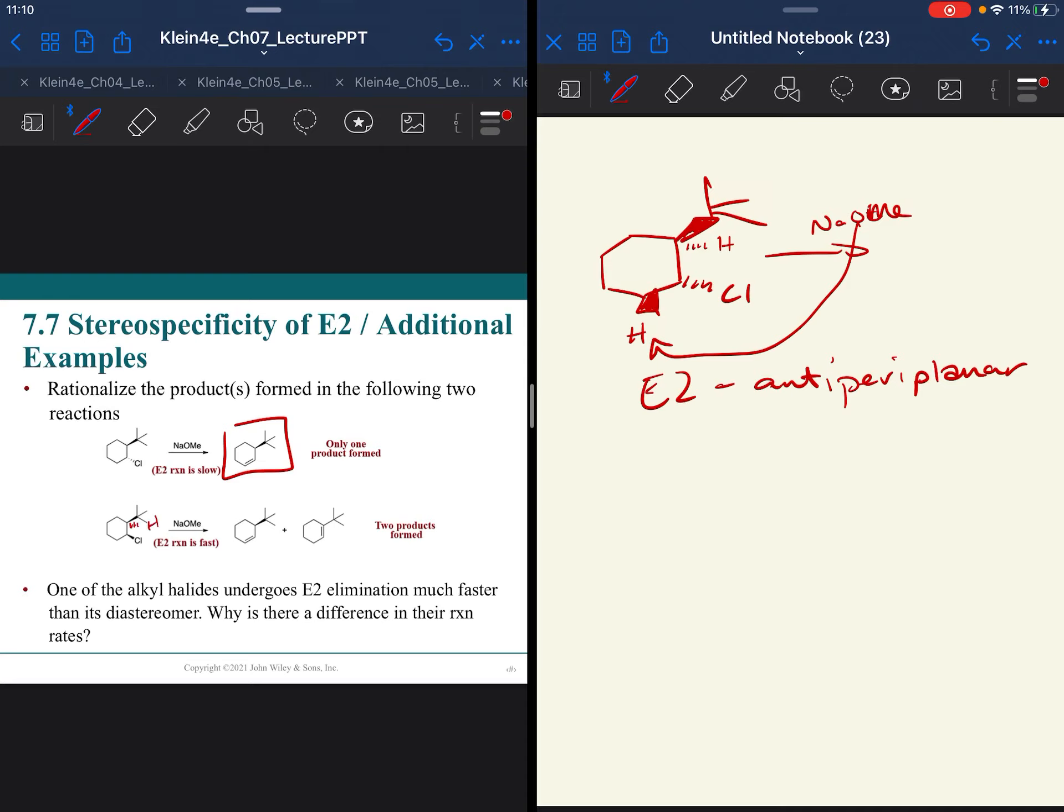If you have a hydrogen here, now you're going to get both. Because it can be anti-periplanar, it's going to be fast. You have a small base. It's going to make the Zaitsev product. It's going to make both, but it is going to make the major Zaitsev product.